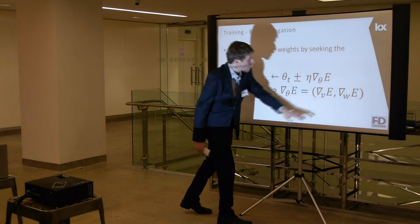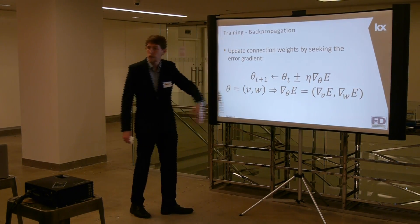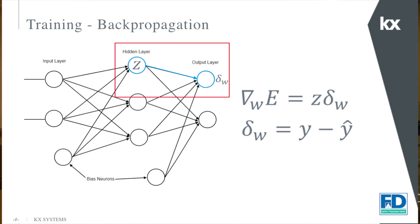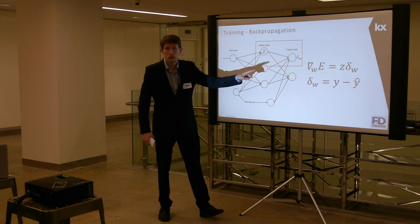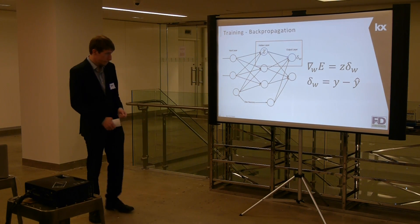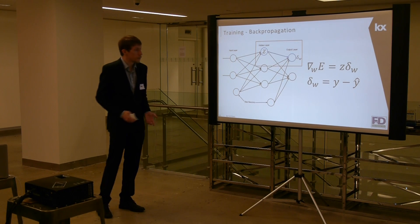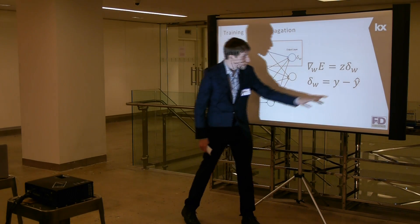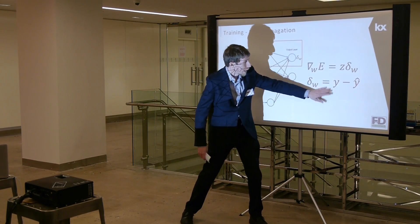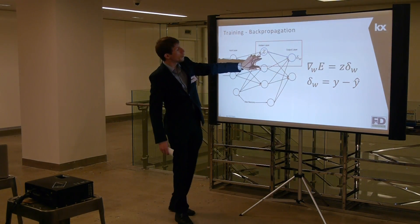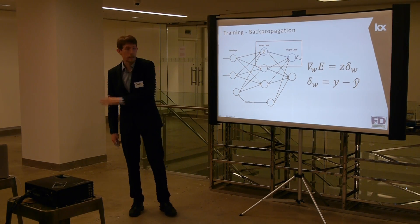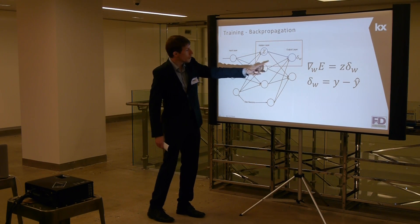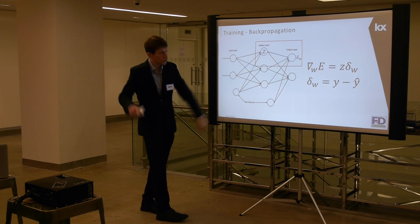We need the gradient of our error with respect to each weight matrix. We start with the weight matrix between the hidden and output layer. The error signal there — for regression with sum of squared errors or cross entropy — works out simply as the difference between what we calculated and what we had as targets. We then multiply it by what we already have from the hidden layer calculation. That gives us the gradient for W.